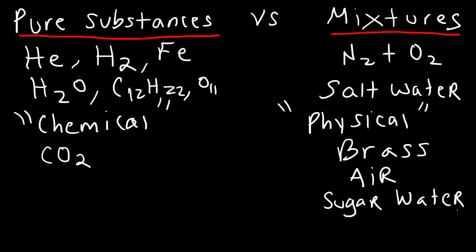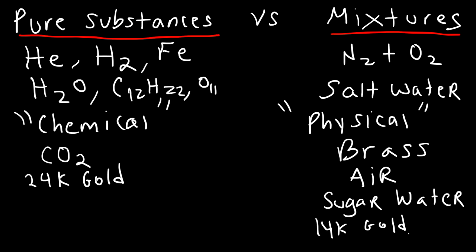24-karat gold is pure gold, and since gold is an element, it's a pure substance. 14-karat gold, however, is a mixture — it's an alloy like brass, containing gold along with other metals such as silver or copper. So 14-karat gold is a mixture of many metals.